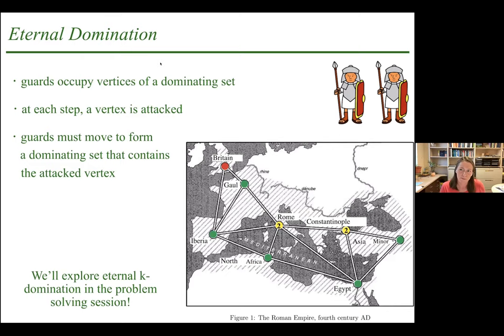In the problem solving session, we'll explore eternal K-domination: instead of looking at dominating sets, we look at K-dominating sets — instead of needing to be adjacent to a guard, you need to be within distance K of a vertex in the dominating set. These three problems — L-visibility cops and robbers, the pyro game, and eternal K-domination — are all fairly accessible and fun games on graphs. Whether you're familiar with graph searching or new to it, hopefully you're a little interested in joining the session.